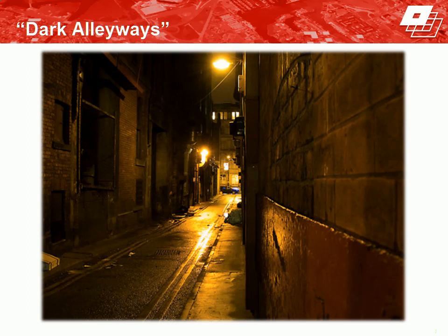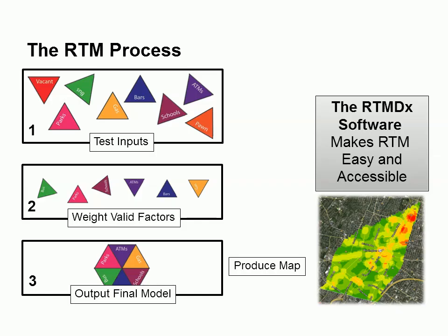With this in mind, we developed risk terrain modeling at Rutgers University to identify features of the environment that attract crime and to show how they interact with each other to aggravate crime risks. RTM was invented to identify unique behavior settings for crime. Consider the clichéd dark alleyway — in that case we're considering at least two attributes: an alleyway and poor lighting. Each factor might be risky, but we expect that crime risk is exceptionally high where these factors coexist. RTM does this in a more statistically robust way.